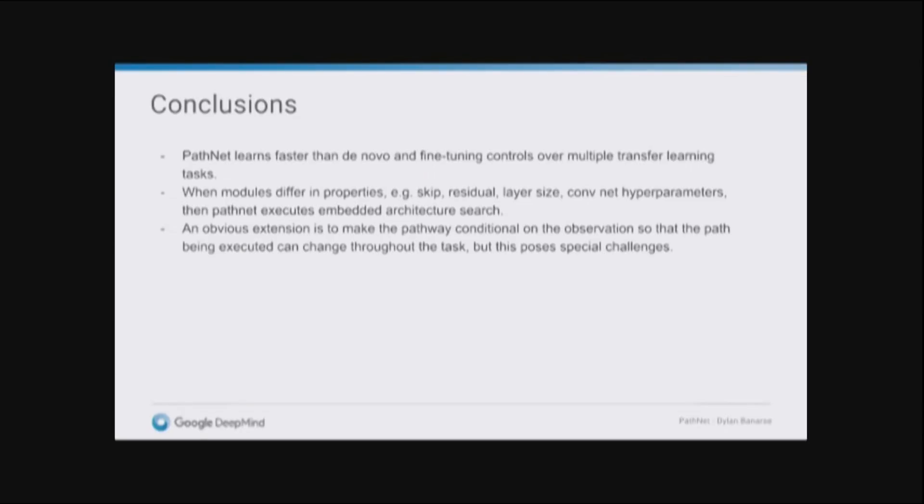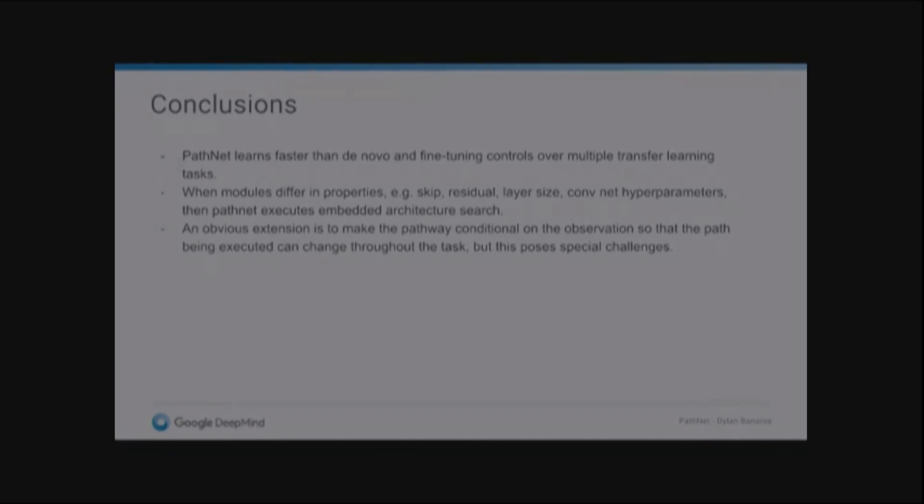To conclude, PathNet is a good first step, I think, in one way of reusing combinatorially different neural modules and using evolution to decide which parts of a large neural network to train. Effectively, it does a kind of architecture search with Lamarckian inheritance of these weights, because it's just the same set of weights being trained, but evolution is deciding to sort of chop and change those modules. And an obvious extension is to make the choice of paths conditional on the image, but that has lots of special challenges. And so I can't talk about that at the moment. Thank you very much.